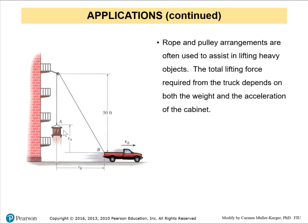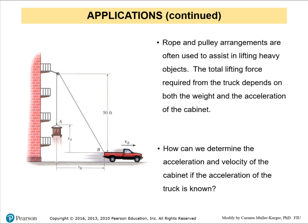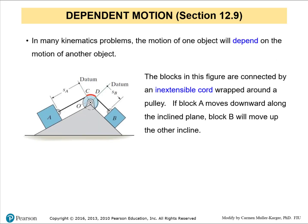Here we have another example. We have the velocity of a truck and we want to control the velocity of a heavy object being lifted. How do we relate these two velocities? Can we determine the acceleration of the object if we have the acceleration of the truck? In many cases, the motion of one object will depend on the motion of another object.